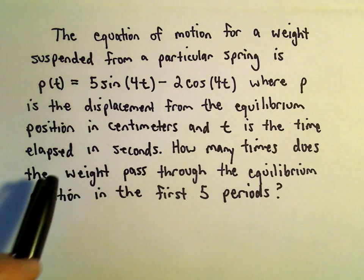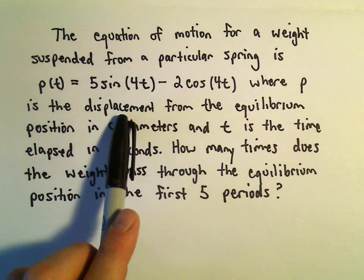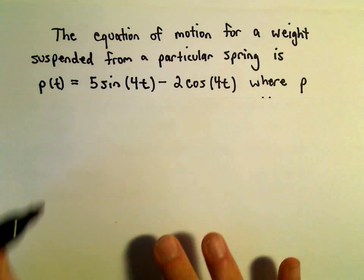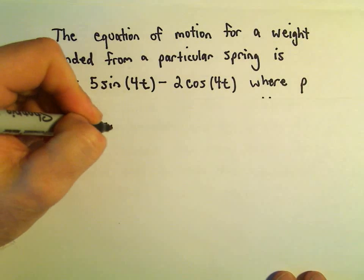If it passes through the equilibrium position, that means its displacement from the equilibrium position would be 0. So we're going to make the left side of this equation equal to 0 and then we're going to try to solve it out.